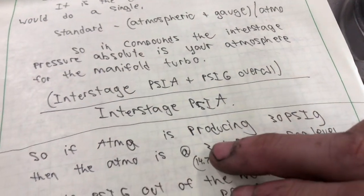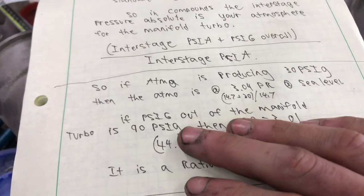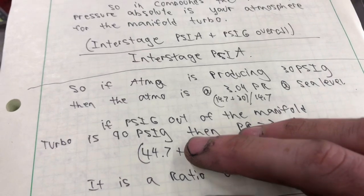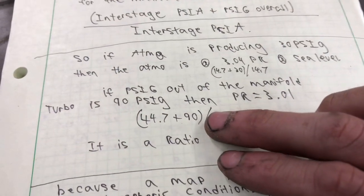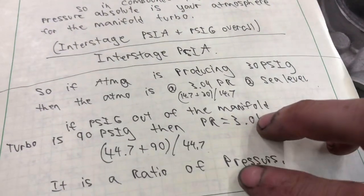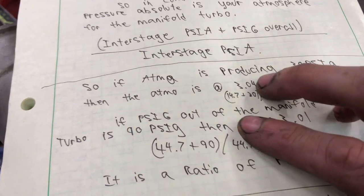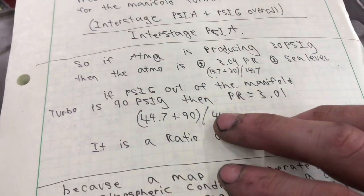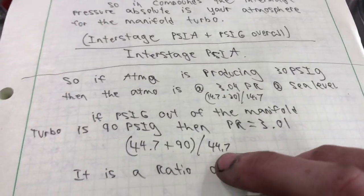So that's 44.7. And then the pressure ratio for the Atmo is 3.04, because you just do it how you do any pressure ratio, because you can kind of treat it kind of as a big single sitting out there out front. If the PSIG out of the manifold turbocharger is 90 PSIG measured by a gauge, then the pressure ratio for the small turbocharger is 3.01. Sounds kind of weird, right? Because it's taking 30, but what you want to think about is taking 30 and raising it to 90 is what's going on. And how you do that is, like I said, it's the interstage atmospheric pressure plus overall pressure divided by interstage atmospheric pressure.